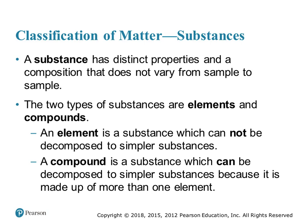A substance does not have a variable composition. It can be broken down into two types: elements, which are made up of one type of atom and cannot be decomposed into a simpler substance — they are in their smallest state — or a compound, which is two or more different elements chemically combined, and it can be broken down into its smaller substances, but to do so it must be through a chemical process.